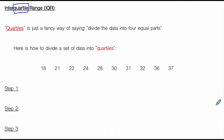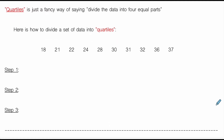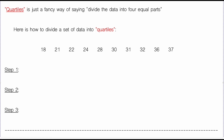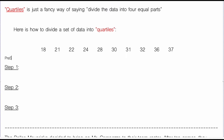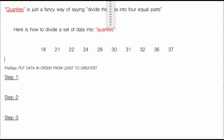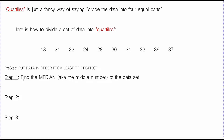I'm going to show you how to divide a set of data into fourths using steps. Maybe take notes, pause and screenshot, or use this as notes. Pre-step: put data in order from least to greatest — you can't do anything unless that occurs. Step one: find the median, which we learned yesterday is the middle number of the data set. We're going to cut our data in half.